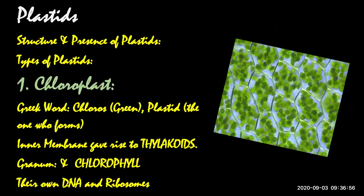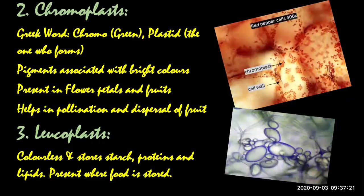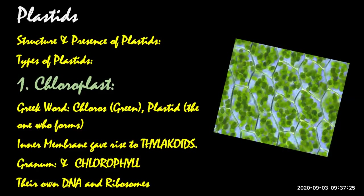Plastids are eukaryotic, and there are three types: chloroplast, chromoplast, and leucoplast. These plastids occur only in plant cells and photosynthetic protists, but not in animal cells. Photosynthetic protists means algae — in kingdom Protista, algae are photosynthetic and also have plastids, just like plants.